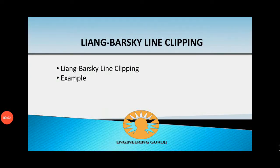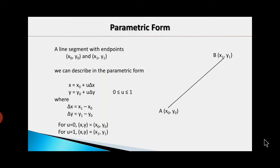Hello students, today we are going to discuss the Liang-Barsky line clipping algorithm with the help of an example. Here we are seeing the parametric form of a line. A line is given with two endpoints x0, y0 and x1, y1, and we are writing the x and y coordinates in the parametric form: x equals x0 plus u·delta_x, where u is the parameter and delta_x is x1 minus x0. Similarly, y equals y0 plus u·delta_y. The value of u ranges from 0 to 1.